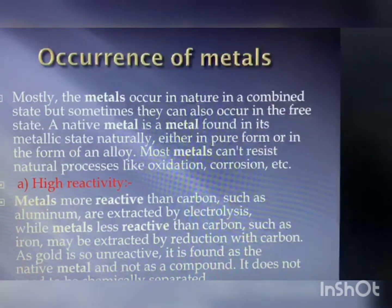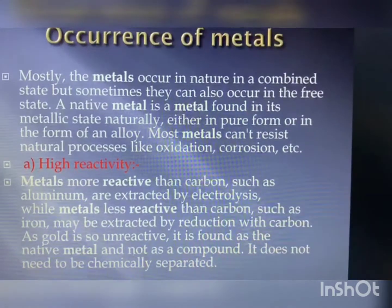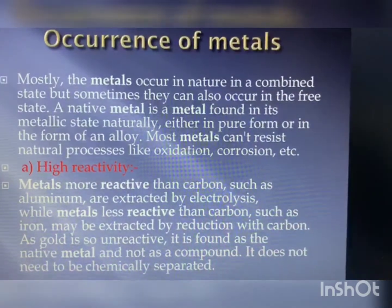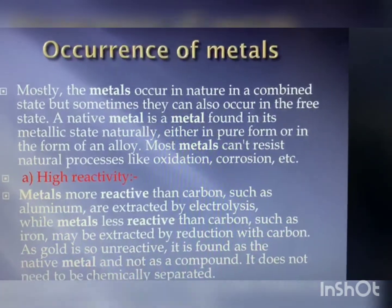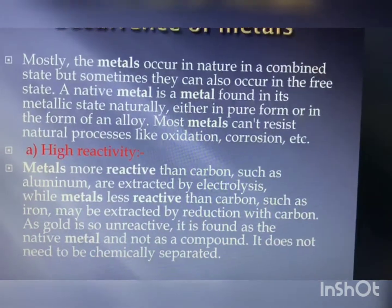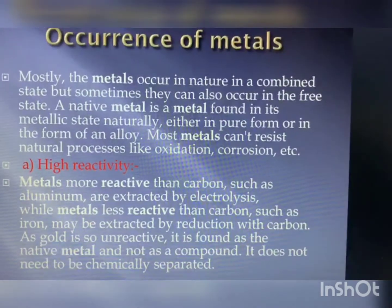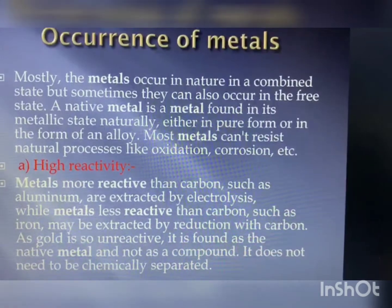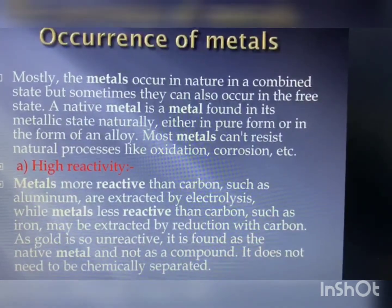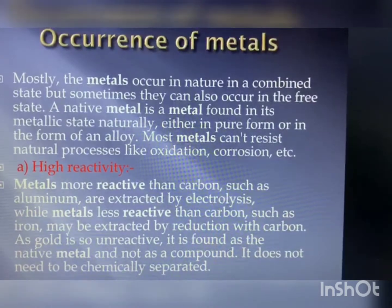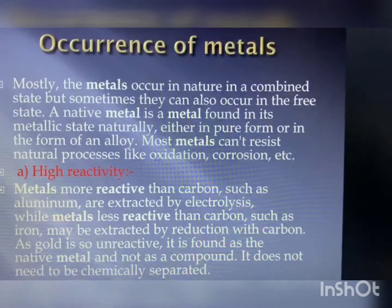Metals of high reactivity: metals more reactive than carbon, such as aluminum, are extracted by electrolysis. Metals less reactive than carbon, such as iron, may be extracted by reduction with carbon. Gold is so unreactive that it is found as a native metal and not as a compound, so it does not need to be chemically separated.